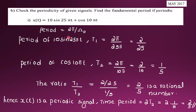Find the periodicity of the given signals and find the fundamental period if periodic. For x(t) = 10sin(25πt) + cos(10πt), the angular frequency of the first term is ω₁ = 25π, and the angular frequency of the second term is ω₂ = 10π.